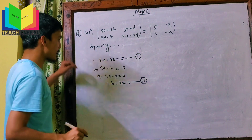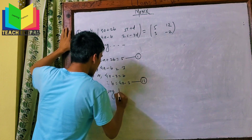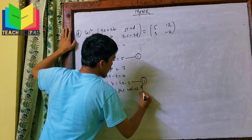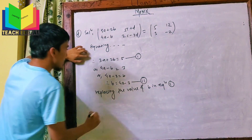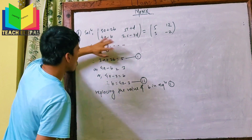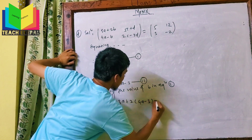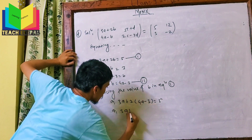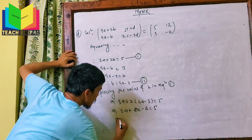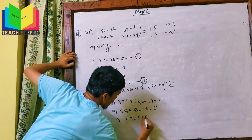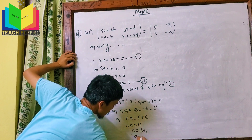Substituting the value of b from equation 2 into equation 1: 3a plus 2(4a-3) equals 5, giving 3a plus 8a minus 6 equals 5, so 11a equals 11, therefore a equals 1.